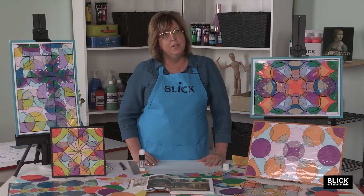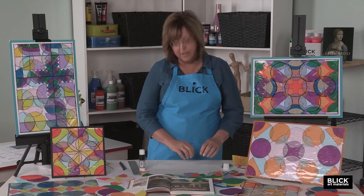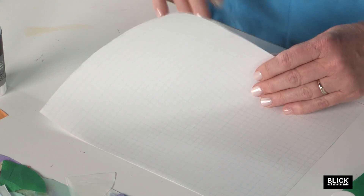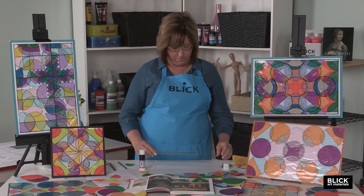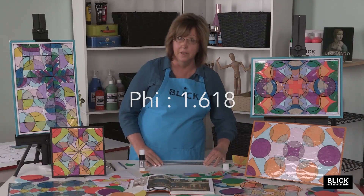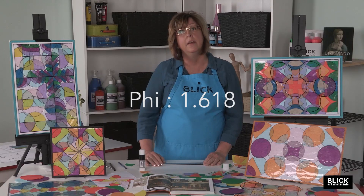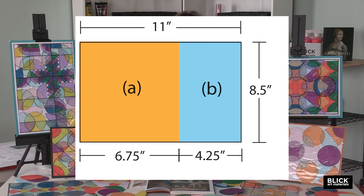To find the golden ratio, let's look at the length of our paper, which in this case is 11 inches, and divide it by phi — 1.618 — so that we will have two sections. The ratio of the larger section to the whole page is equal to the ratio of the smaller section to the larger section.